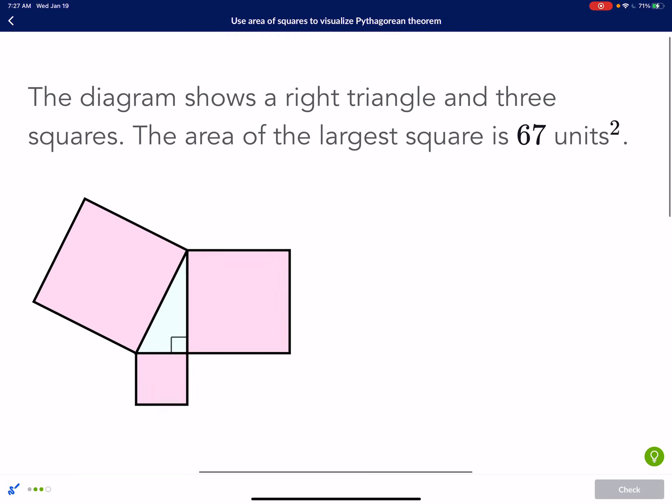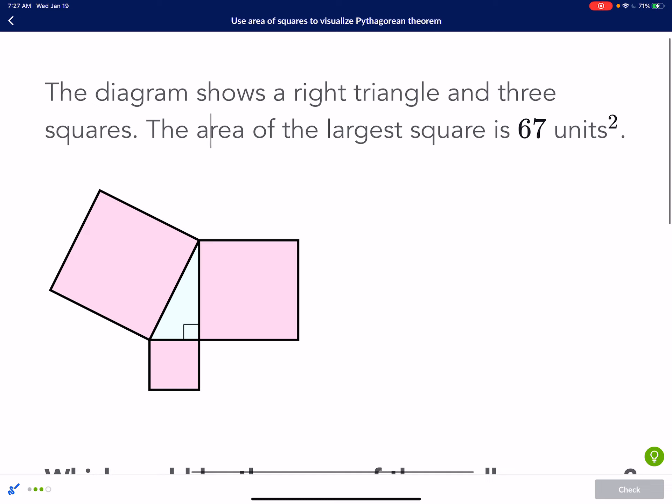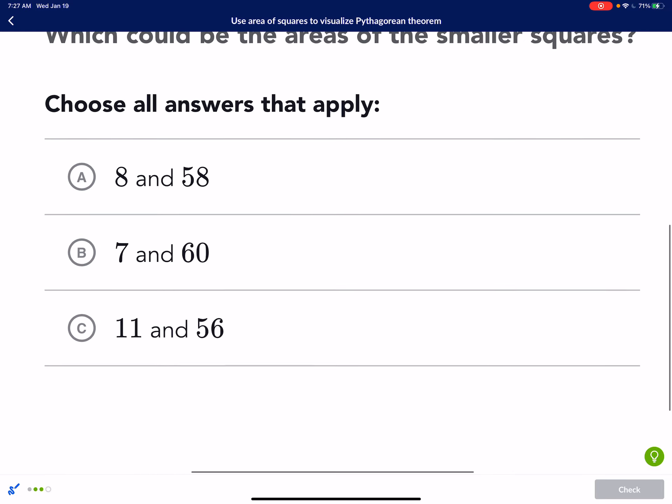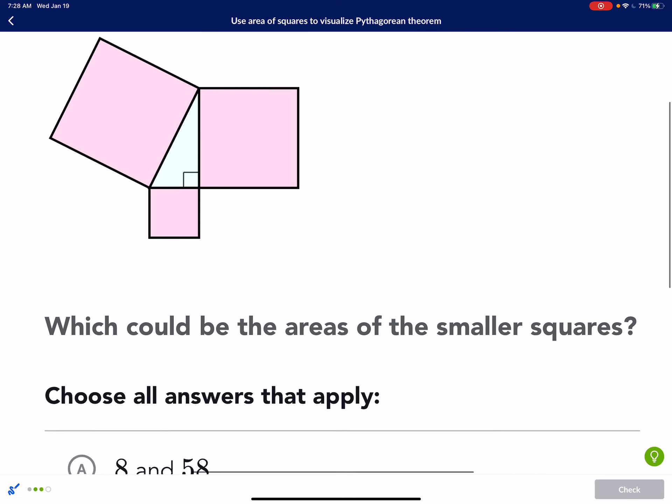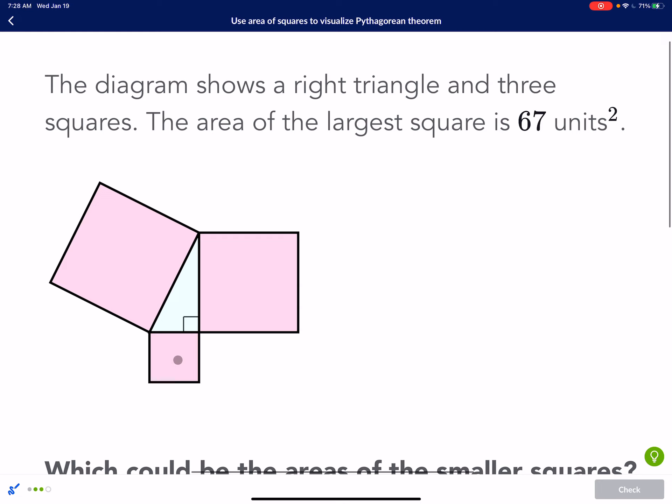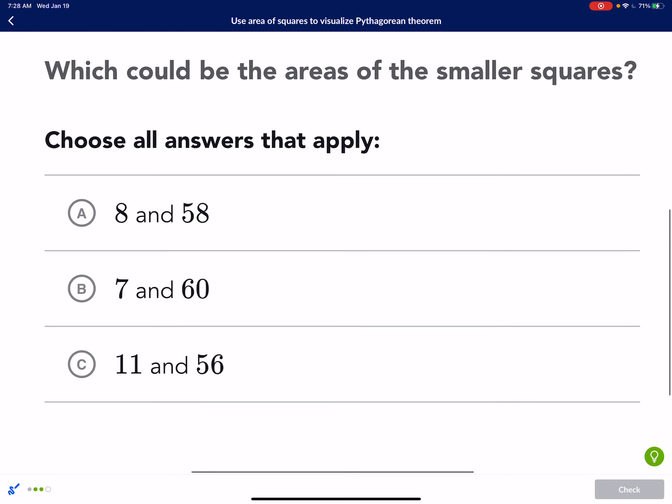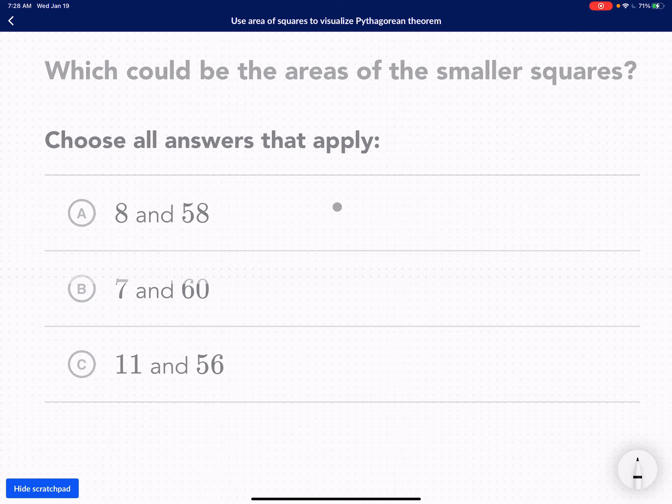Okay, and then let's try this one. The diagram shows a right triangle and three squares. The area of the largest square is 67 units. So the largest square, this right here is 67, because the largest square is created by the longest side, which is the hypotenuse, which is across from the 90 degrees. So this is 67 units. And so both of this area plus this area has to equal to 67. So let's take a look. 8 plus 58 equals 66. 60 plus 7 is 67. And then 11 plus 56 is 67.